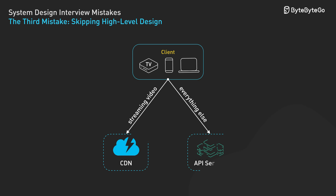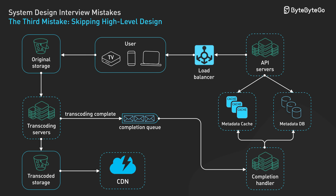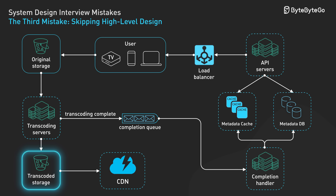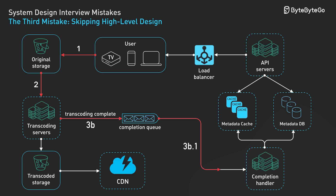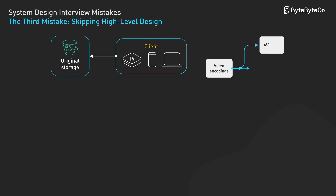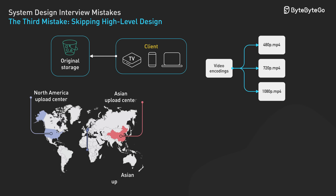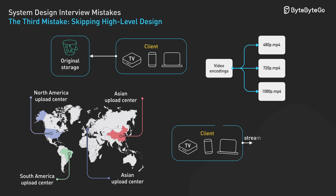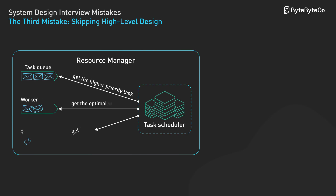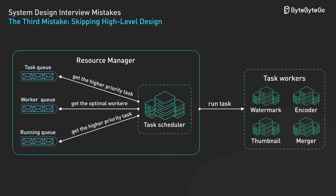The fix: start with the big picture. Begin with major components — we need an upload service for content creators, a processing service for video encoding, storage for video files, and a streaming service for viewers. Show the relationships: user uploads through our API, videos get queued for processing, processed videos go to distributed storage, and streaming happens through our CDN. Walk through the flow: a creator uploads a video, it gets encoded into multiple formats, stored across regions, and served to viewers based on their location and device. Only then dive into specific components.